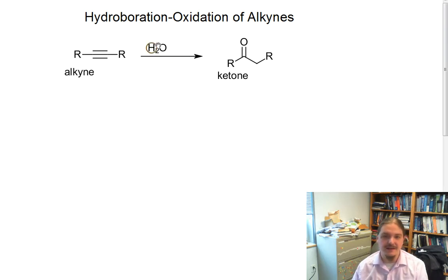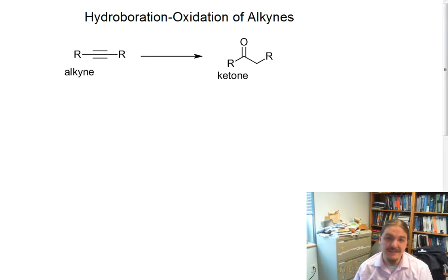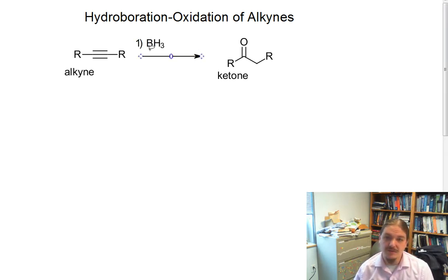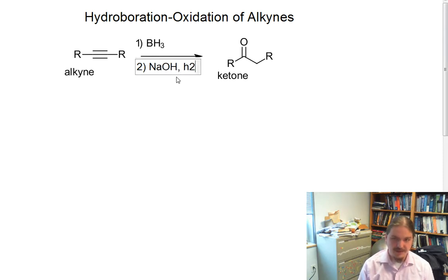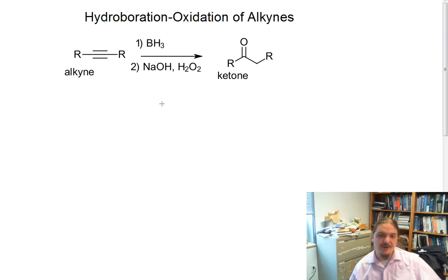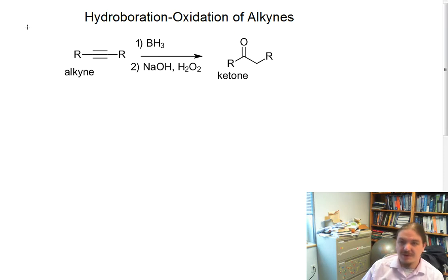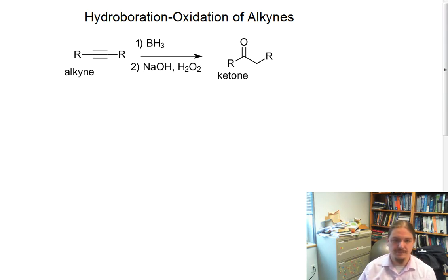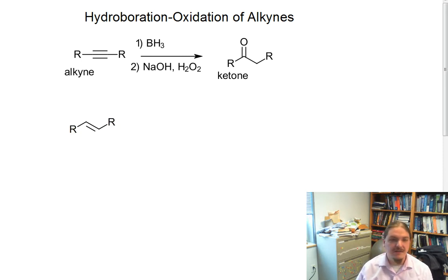It turns out that the hydroboration oxidation reaction of alkynes is actually really similar to the hydroboration oxidation of alkenes. The reagent is the same, with a certain exception that we'll talk about here in a moment. And like with alkenes, the reaction also needs oxidation as a second step. If you just learned about oxy-mercuriation of alkynes, you learned that oxy-mercuriation doesn't need the demercuriation step with the reducing agent. Hydroboration still needs oxidation with the second oxidation step, compared to the alkene version.